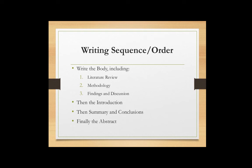We're going to discuss the sequencing of writing and the order in which you might place your paper. We suggest that you write the body of the paper first — that would include the literature review, the methodology, and the findings and discussion sections — and then go back and work on writing the introduction. You can go back and use all of the body to refocus the introduction even after you've written it. After all those pieces are completed, you write the summary of conclusions, and finally the abstract, but not until the very end.